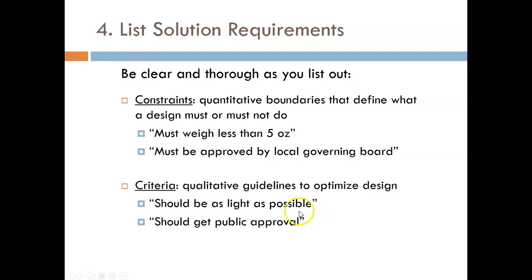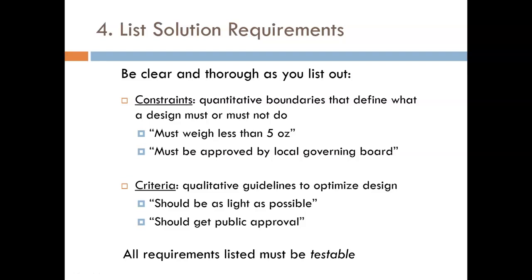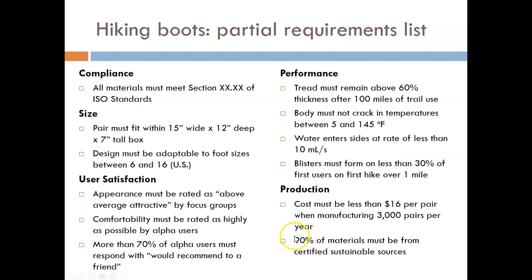It is likely that any design will have a large number of both constraints and criteria listed out. No matter what you write down, make sure that your requirements are specific and testable. Vague statements like 'the backpack needs to be durable' are not helpful — how are you going to test that? Look at this short list of requirements for the design of a hiking boot. Notice how it uses specific requirements to clarify what is meant by an idea such as 'must be durable.' The statement 'tread must remain above 60% thickness after 100 miles of trail use' is directly testable. Make a few shoes, have a few people hike 100 miles in them, measure the tread thickness afterwards.